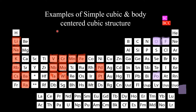If you look here, I have written that BCC is in red color — the whole periodic table is labeled in red color. You can see lithium, sodium, chromium — all these are body-centered cubic structures. The simple cubic structure is also marked, such as oxygen, fluorine, and polonium. These are simple cubic structures.